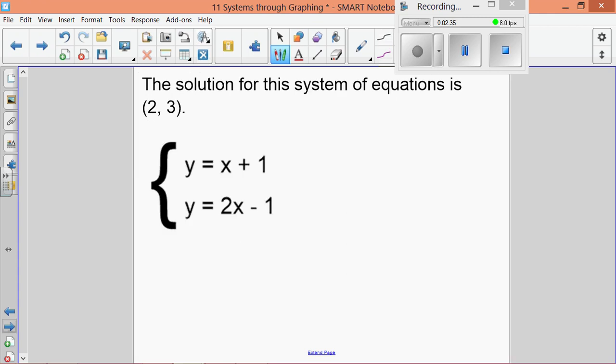For example, the solution to the system that we've been looking at so far is (2, 3). If I substitute 2 in for x, 2 plus 1 is 3. I get a true statement: 3 equals 3. This ordered pair satisfies this equation.